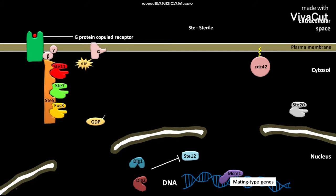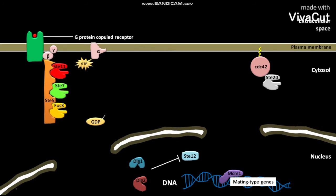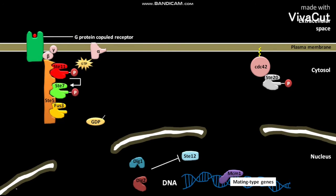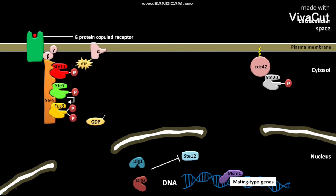The cytosolic ST20 then binds to a GTPase called CDC42 and gets phosphorylated. The phosphorylated ST20 then phosphorylates and activates ST11. The phosphorylated and activated ST11 then phosphorylates and activates ST7.